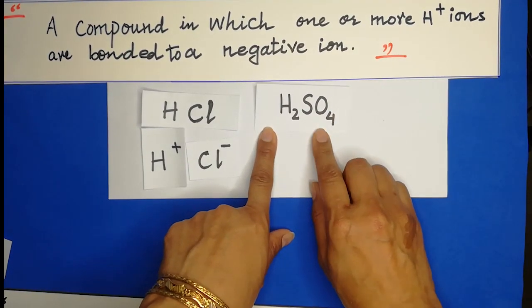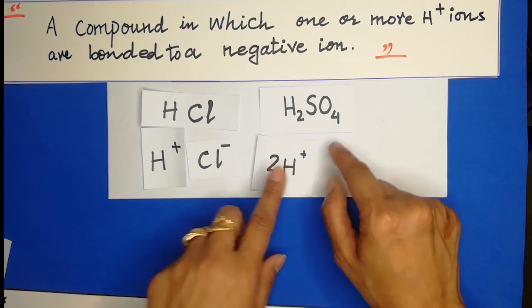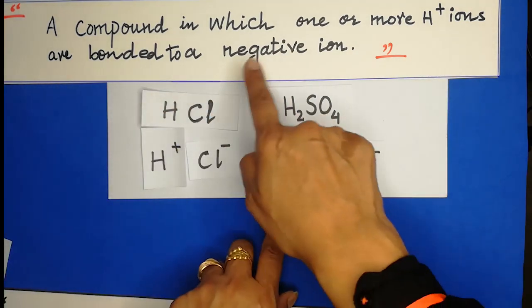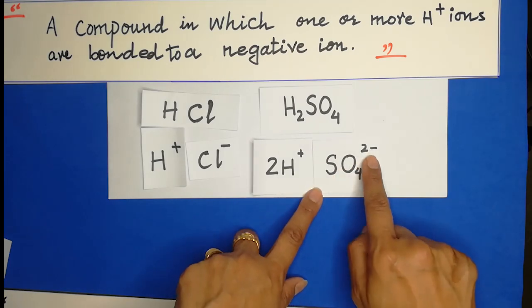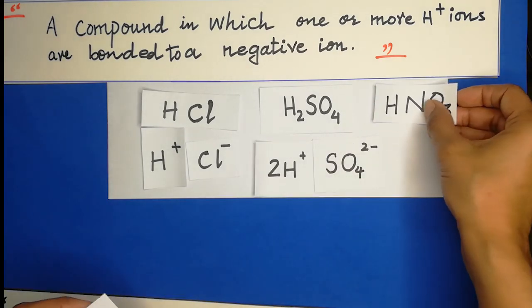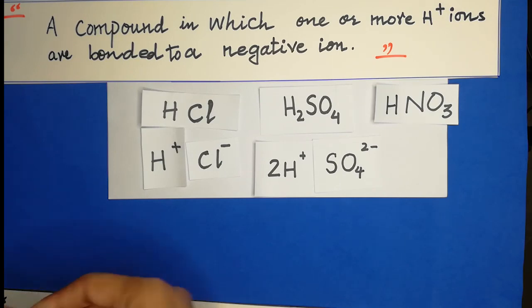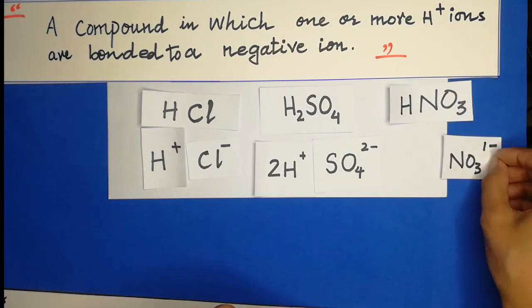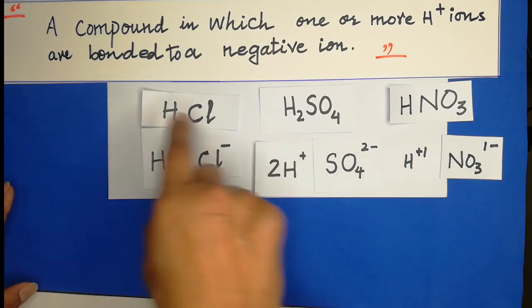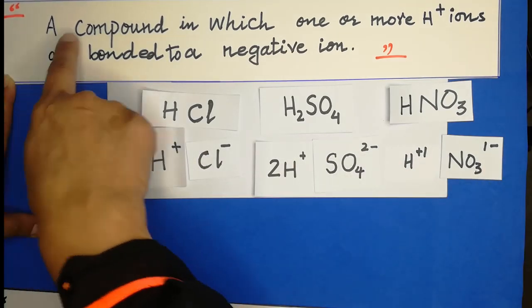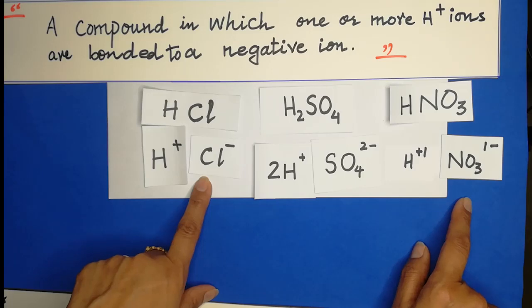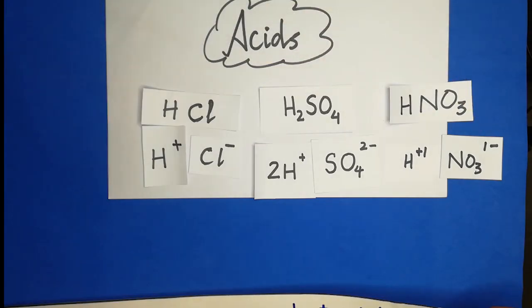The next example is sulfuric acid. In H₂SO₄ we can have two hydrogen ions and one sulfate ion, so one or more hydrogen ions are bonded to a negative ion — sulfate is the negative ion. Another example is nitric acid — the negative ion present is nitrate, so the hydrogen ion is bonded with the nitrate ion. This is the first definition of acid.